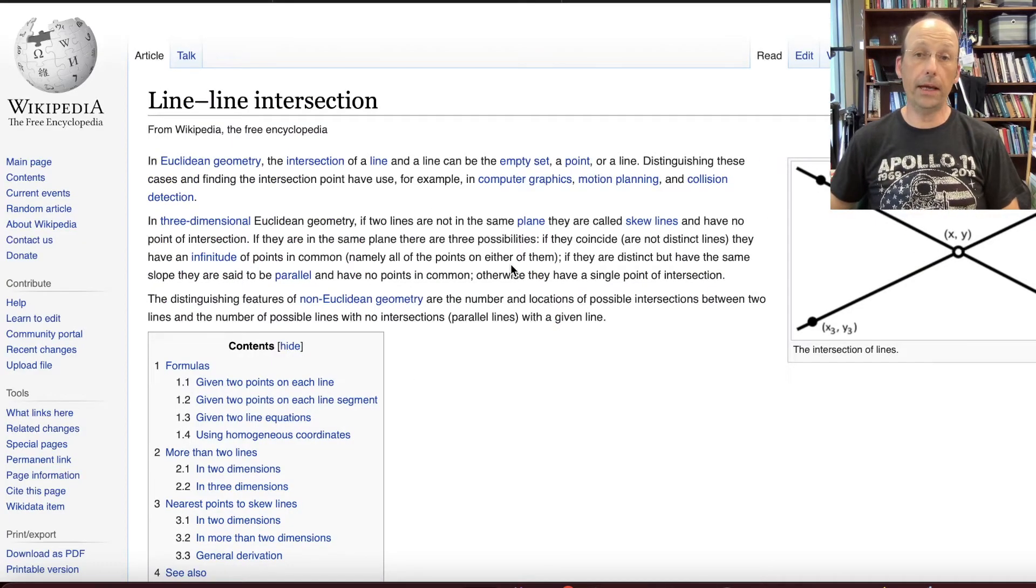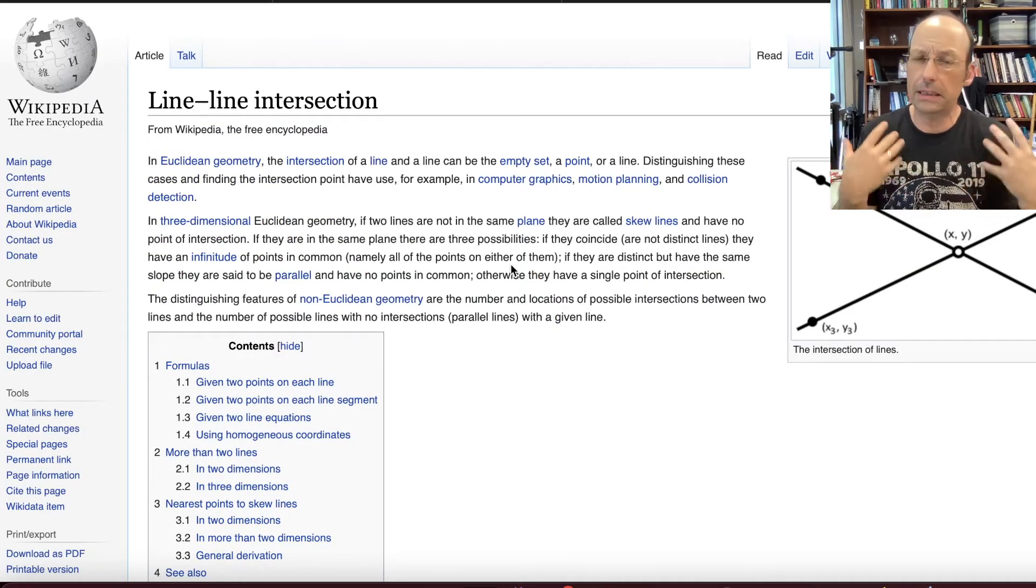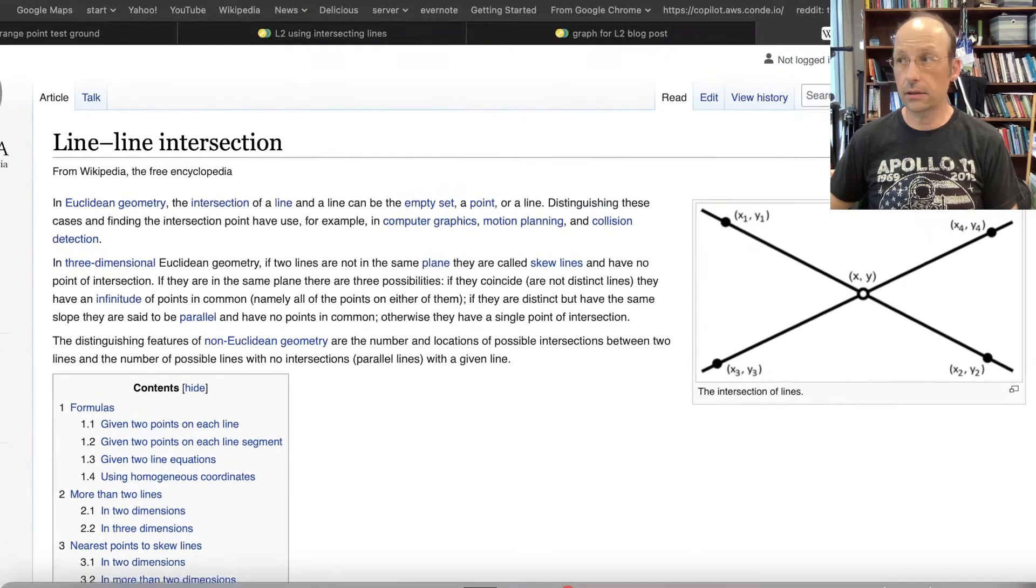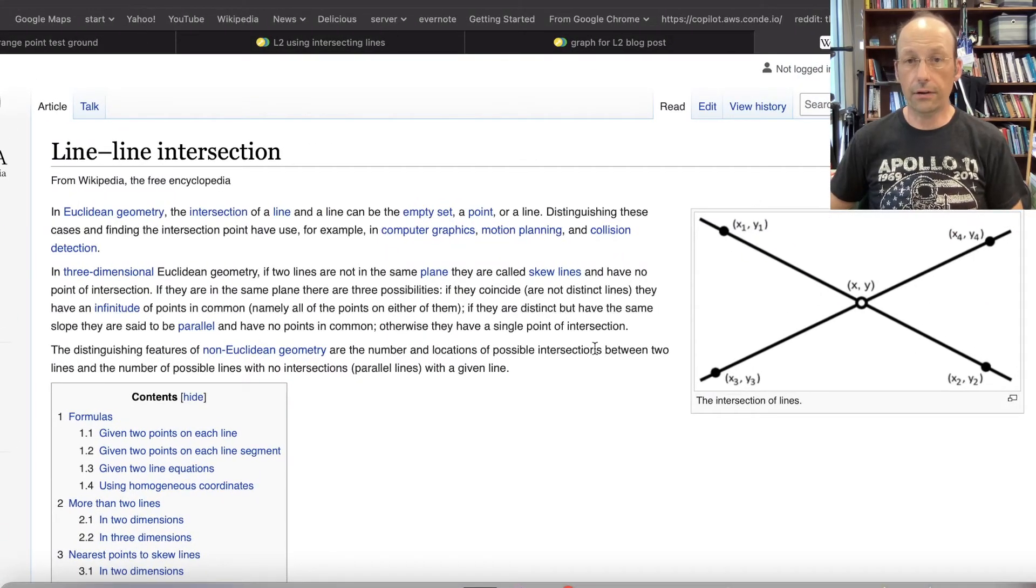So this is the Wikipedia page on line, line, intersection. I thought it would be easy, but it's actually not trivial. But this picture right here really shows you something that you can't actually see. Okay, right there. So right there.